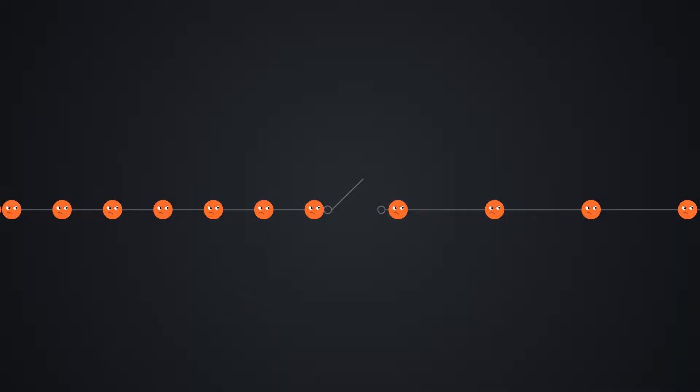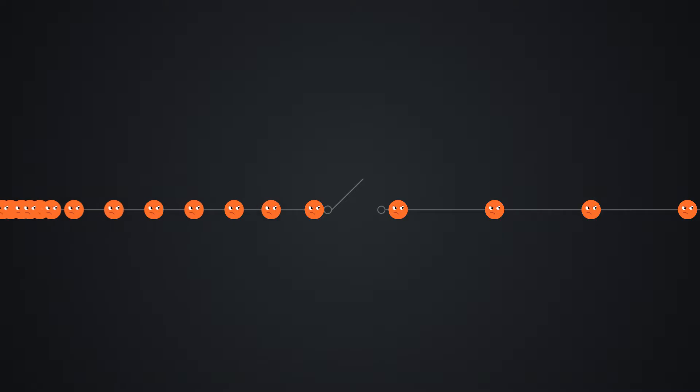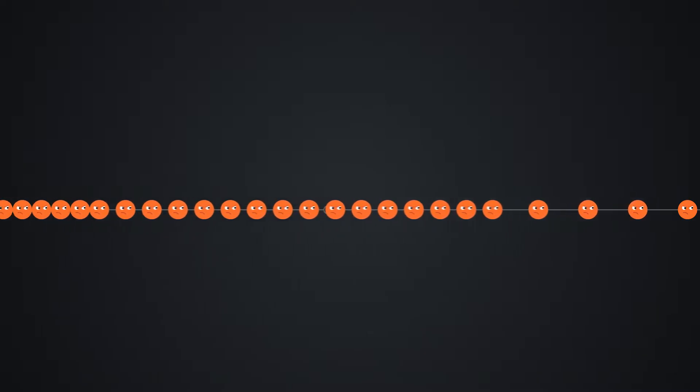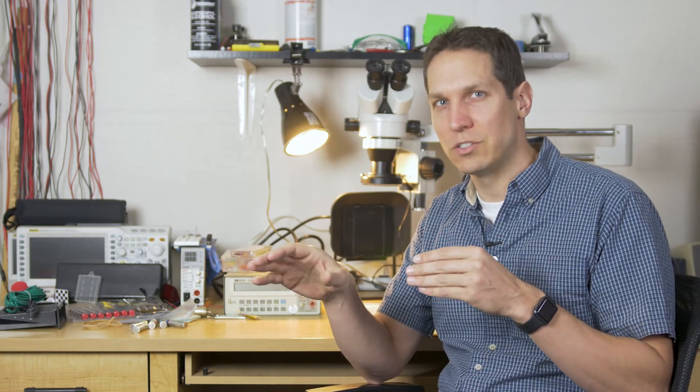In this sea, the electrons are still trying to get away from each other, and using this property, you can do work. By shoving a bunch of electrons together in one place, they'll try and run away from where there are a lot of electrons to where there are less electrons. Usually when we think of electricity, we're thinking of this flow of electrons.